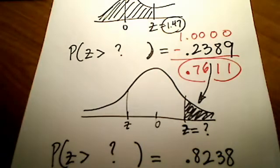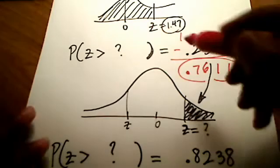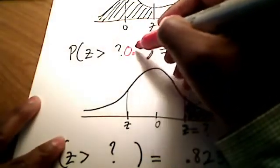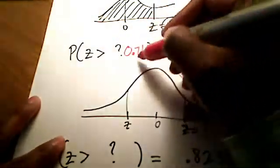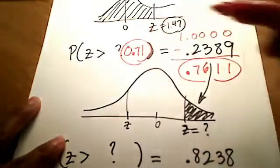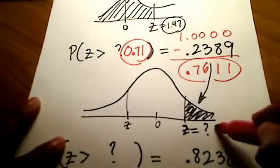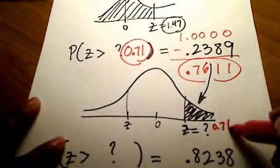If you look up 0.7611 on the table, the corresponding z-number is positive 0.71. That's the z-number: positive 0.71.